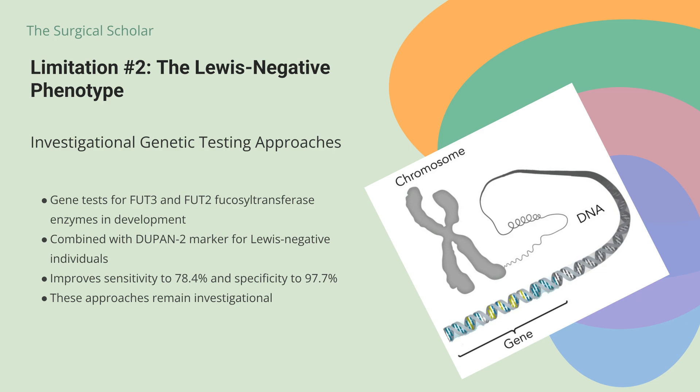Researchers are developing gene tests for FUT3 and FUT2 fucosyl transferase enzymes, which influence CA-19-9 synthesis, to create individualized reference ranges. When these genetic tests are combined with related markers like DUPAN2 — useful for individuals unable to synthesize CA-19-9 — the sensitivity and specificity for diagnosing stage 1–2 resectable pancreatic cancer improve to 78.4% and 97.7% respectively. However, these approaches remain investigational.